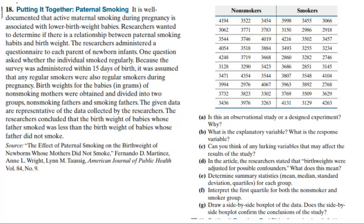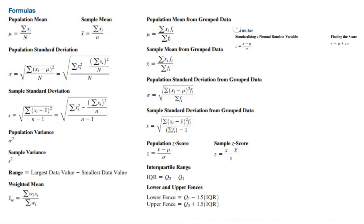The slides also cover the interquartile range (IQR = Q3 minus Q1, representing the middle 50% of data) and upper and lower fence formulas. These fences provide a systematic way, as described by Michael Sullivan, to formally declare whether a data point is an outlier.